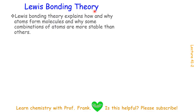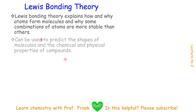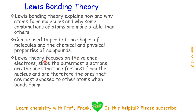Lewis Bonding Theory explains how and why atoms form molecules and why some combinations are more stable than others. One can use Lewis Bonding Theory to predict the shapes of molecules, molecular geometry, as well as the chemical and physical properties of compounds. Lewis Theory focuses on the valence electrons because the outer electrons are further from the nucleus and are the ones most exposed to other atoms when bonds form. That's why when we study chemical bonding, we need to focus on the valence electrons.